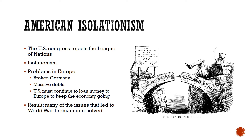Instead, the United States enters a period of isolationism, ignoring what's going on in the wider world and worrying only about its own internal affairs. Meanwhile, there are serious problems in Europe. Germany is basically broken, forced to pay billions of dollars and damaged by the war. All of Europe has massive debts — they owe billions of dollars to the United States and are not in any position to pay them back. The United States also needs to keep loaning money to Europe, otherwise the entire world economy could collapse. Many of the same problems that led to World War I are still around, and the world is in some ways less stable after World War I than before. A lot of these problems lead directly to World War II.